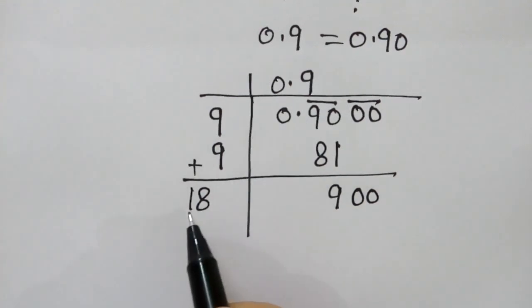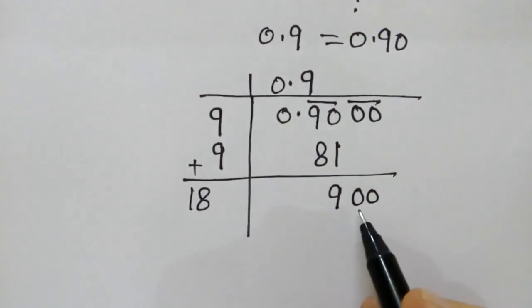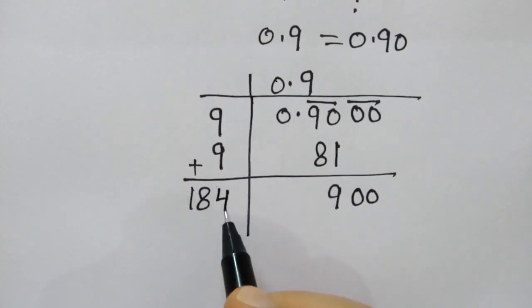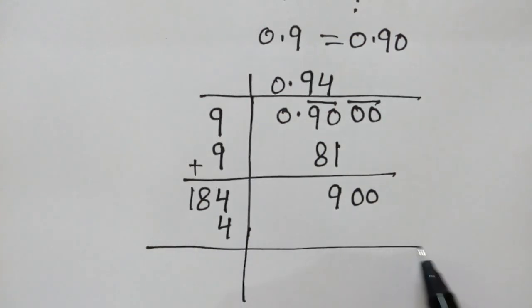Now, 18 will divide into 90 four times. Here we will write 4, and here also 4.